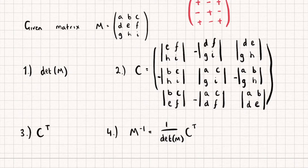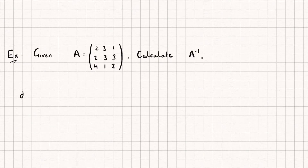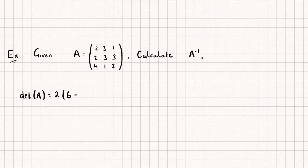Let's now take a look at an example, because I think hopefully that will make it a bit more clear what's going on. We are given a matrix A, and we need to calculate its inverse. So the first step is we're going to find its determinant. The determinant of A, using the first row — hopefully you're familiar with how to find the determinant of a 3x3 matrix — I'm going to do 2 multiplied by 3 times 2, which is 6, subtract 3 times 1.